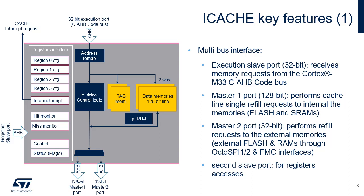The 32-bit execution slave port receives memory requests from the Cortex-M33 CAHB code bus. The 128-bit master 1 port performs cache line refills from the internal memories, flash and SRAMs. The 32-bit master 2 port performs cache line refills from the external memories — external flash and RAMs accessed through the Octo SPI-1 and 2 and FMC interfaces. The second slave port is used for register accesses. When an external memory access is marked as non-cacheable by the MPU, the iCache is bypassed.